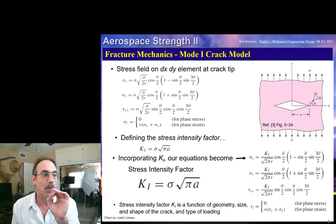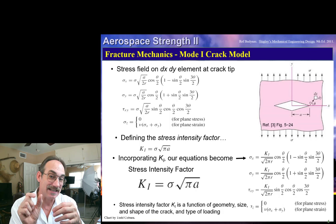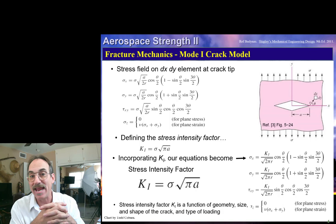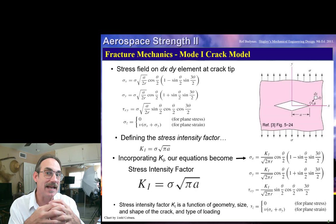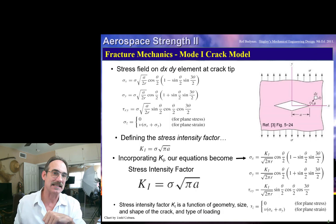To introduce more information about loading and geometry, we introduce a parameter beta — the stress intensity modification factor. This beta will accommodate geometry, loading type, and other details. Let's look at how that works on the next slide.